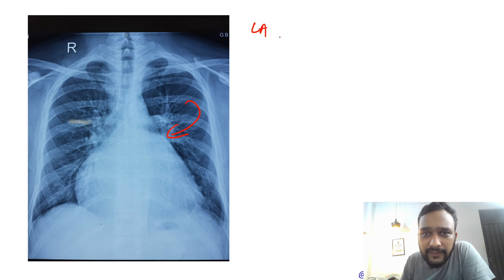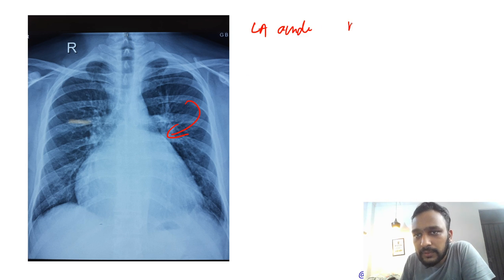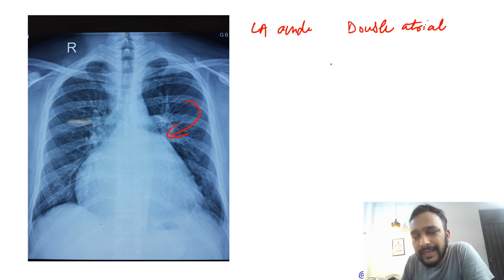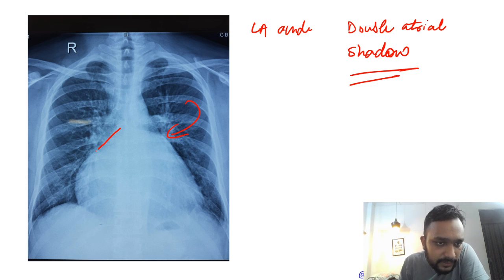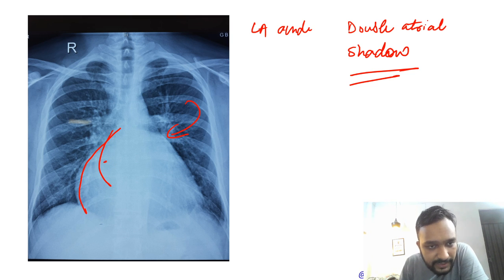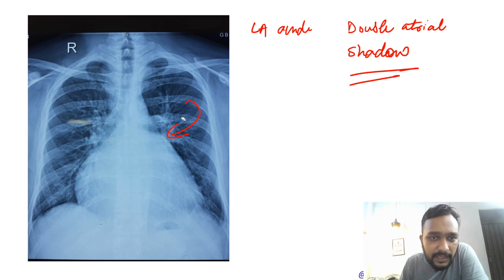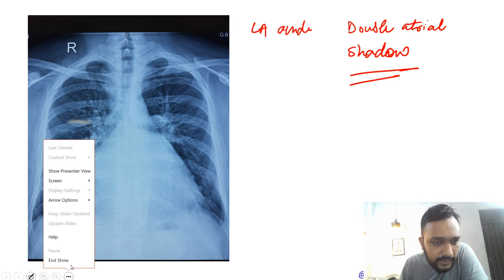The very important sign you are going to see in left atrial enlargement is the double atrial shadow. In this video we will study how we get this double atrial shadow. In this image we can see one heart border and a second heart border — this second heart border is due to the left atrium.